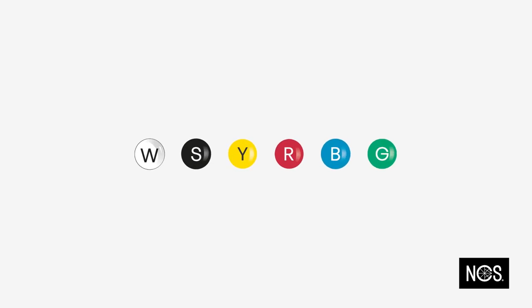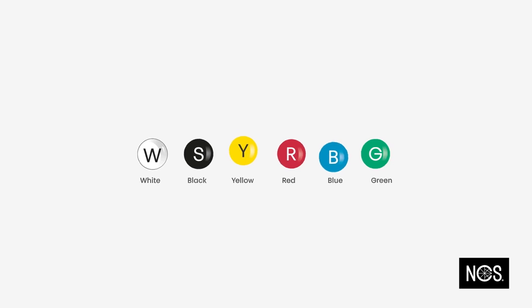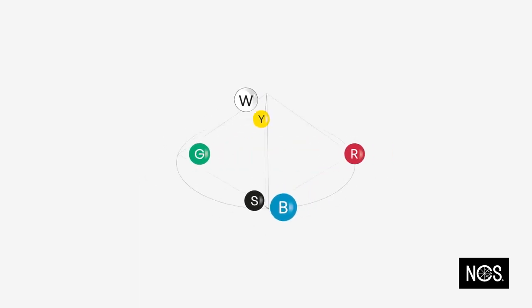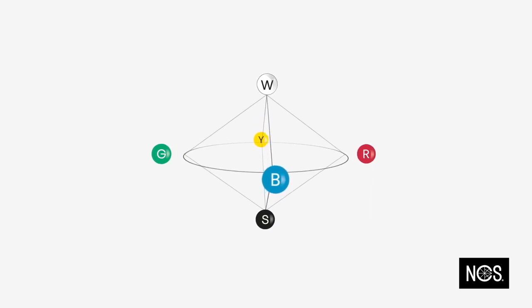NCS defines all colors that we see in relation to the six elementary colors: white, black, yellow, red, blue, and green. They form the NCS color space, and describes the hue and the nuance of each color.